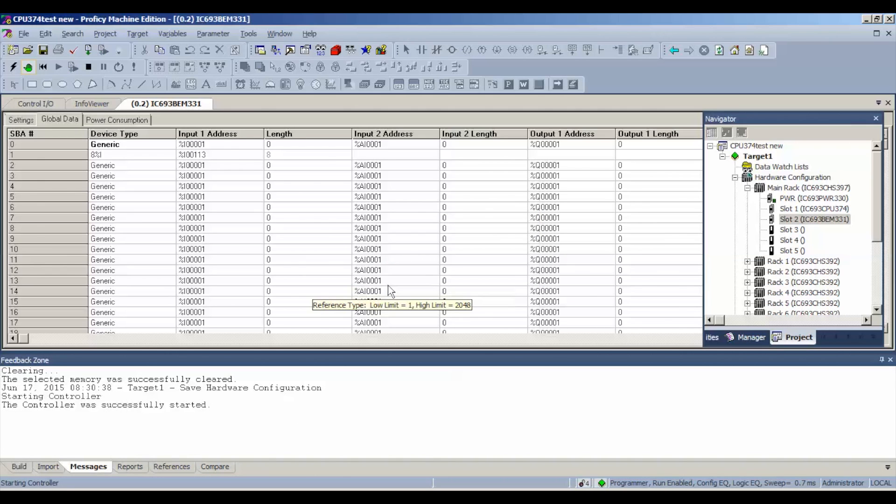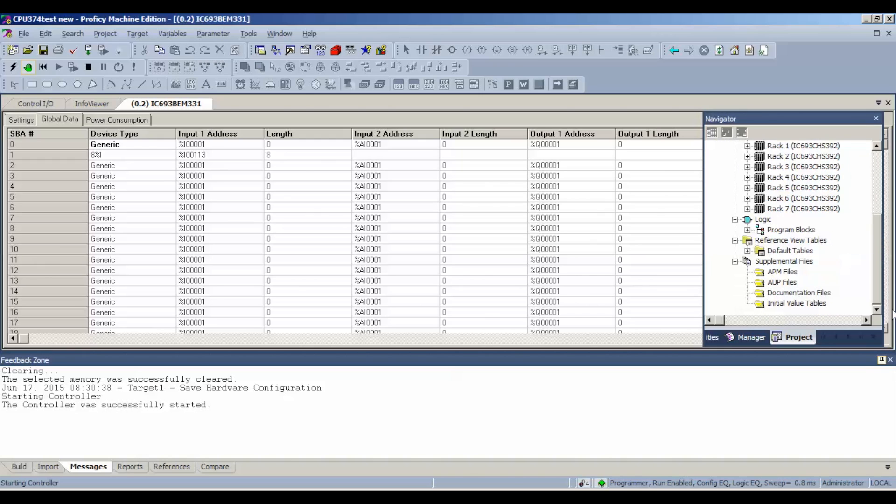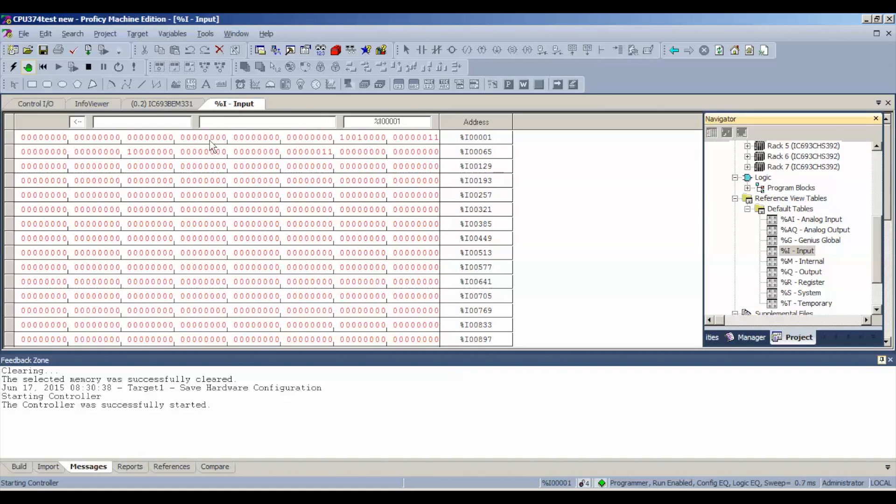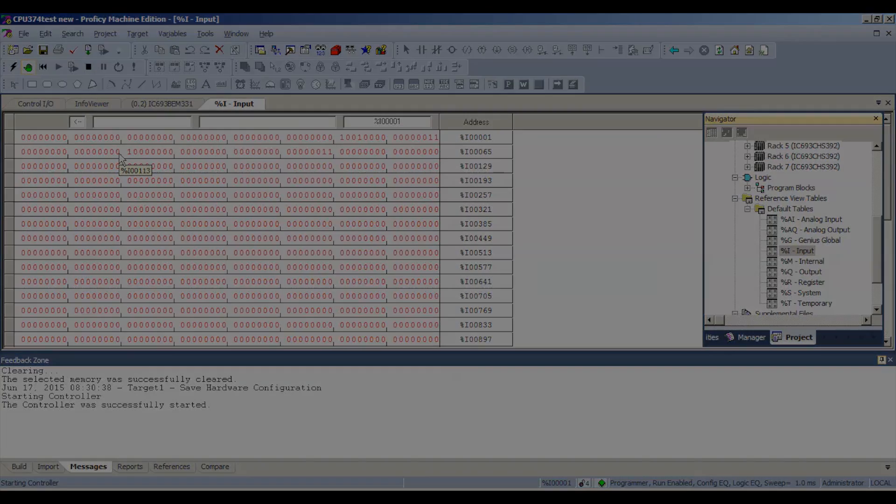Okay. Now, at this point, you should be programmer mode, run enabled, configuration equal, logic equal, and your processor should have all three lights on, or rather the processor should be reporting to the power supply to be in run mode. Now the next thing I'm going to do, since I'm in Proficy Machine Edition, is go down to my default tables and expand that, go to my inputs, and I'm going to bring my arrow over here to where our inputs are going to be coming in. At the tip of my arrow, you can see as I'm hovering over it, it says %00113. That's where I'm going to start to look for my input activity. We're going to toggle these zeros to ones by probing.